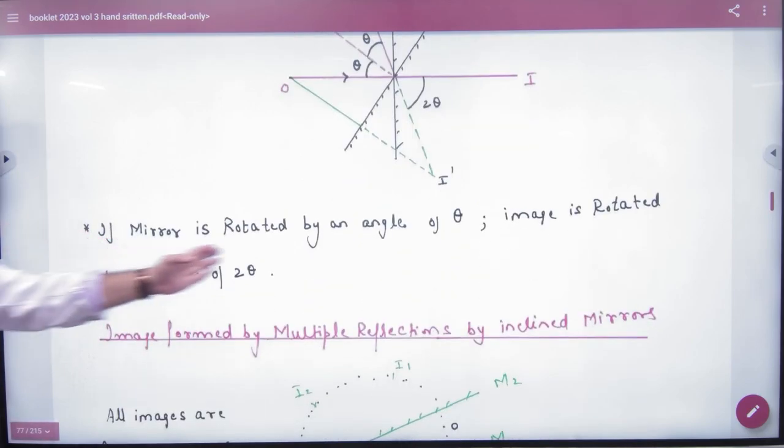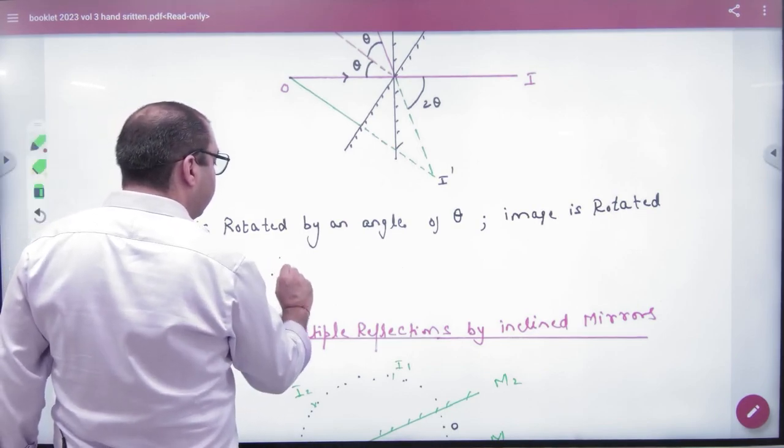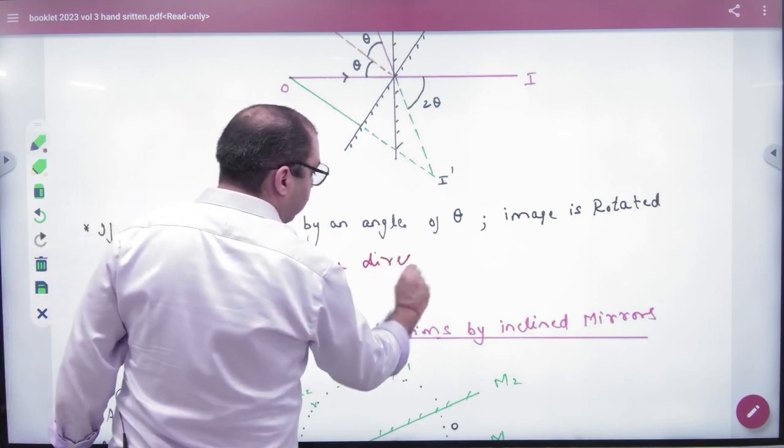To explain this geometry, you can write this note in your formula booklet. If mirror is rotated by an angle of theta, image is rotated by an angle of 2 theta in same direction. In same direction. You can write this.